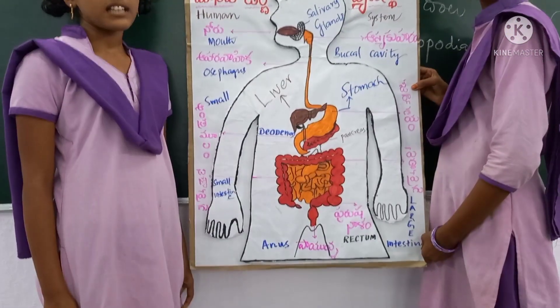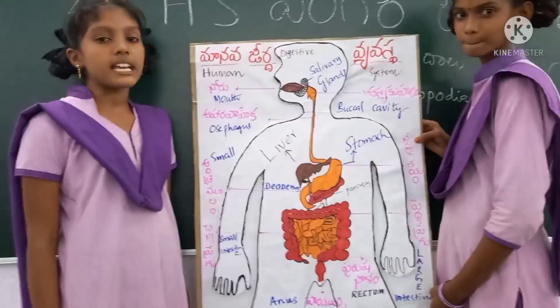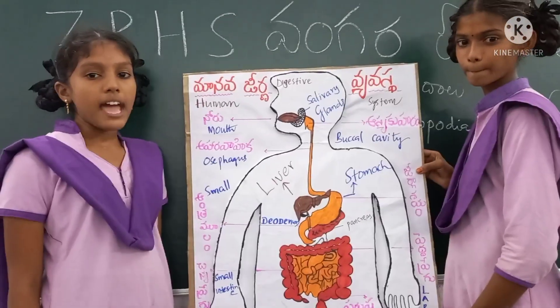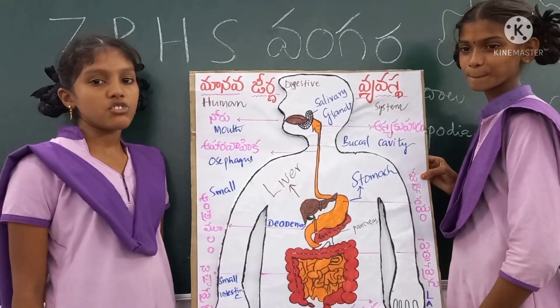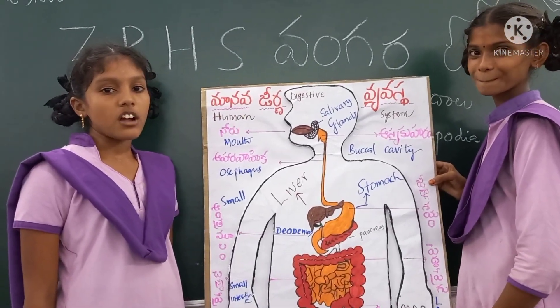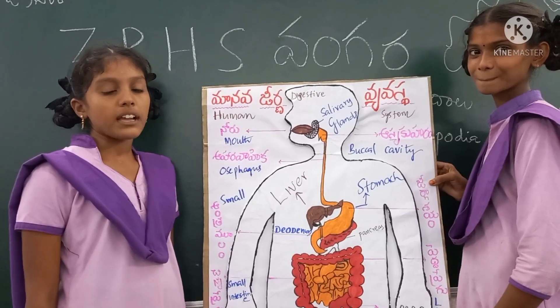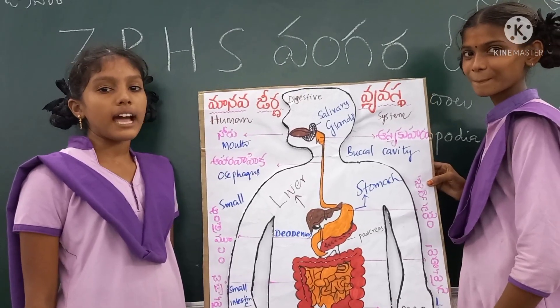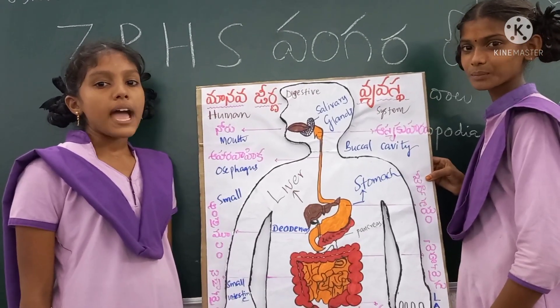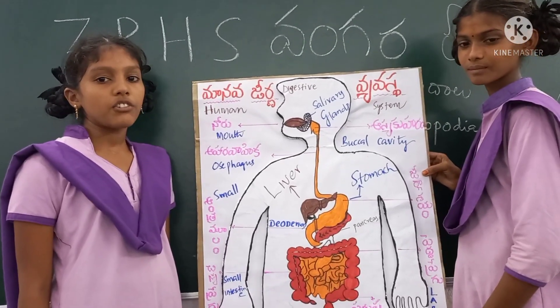Stomach is a muscular sac-like structure. Food is ground well and mixed with its juices. Protein digestion starts in the stomach. Hydrochloric acid in the stomach kills bacteria in the food.